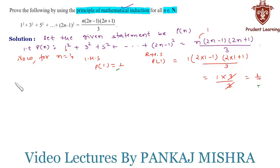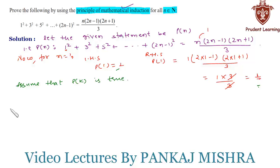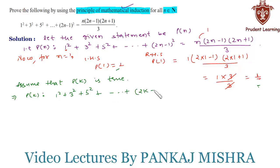Moving on to our second step, that is our assumption step, where we assume that P(k) is true for some positive integer k. That is, 1² + 3² + 5² + ... + (2k-1)² = k(2k-1)(2k+1) / 3. Let us call this equation 1.